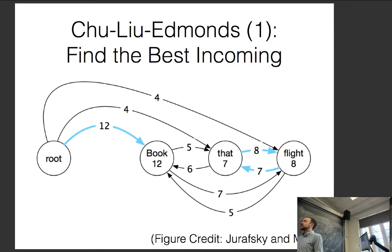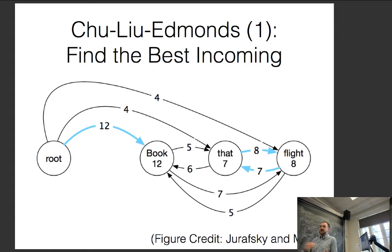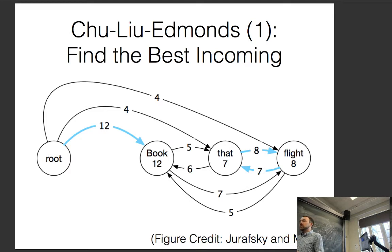Transition-based parsing models with neural networks can theoretically consider distant context, but suffer from the usual RNN problems with things far apart. The reason it's less of an issue with graph-based models is you're running a big algorithm on top that ensures the consistency of the tree overall, getting the maximum tree without any greedy decisions. In transition-based parsing, you're forced to make greedy decisions at the beginning before you know the shape of the rest of the tree.